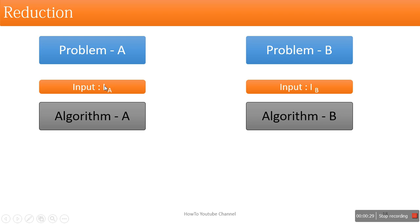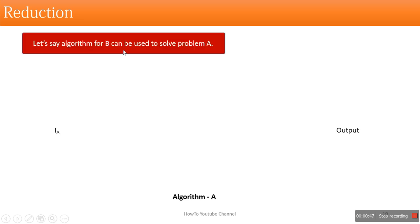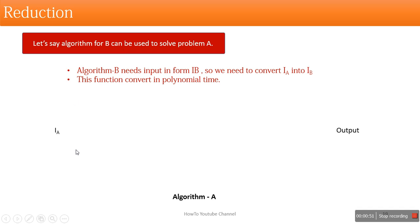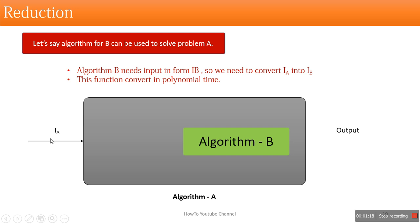Algorithm A needs input in IA format whereas algorithm B needs input in IB format. Now if we want to use algorithm B for solving problem A, the issue is that algorithm B needs input in IB format but the input for problem A is in IA format. So we need some mechanism which can convert the input into the format required by algorithm B. We find a function that can perform this conversion.